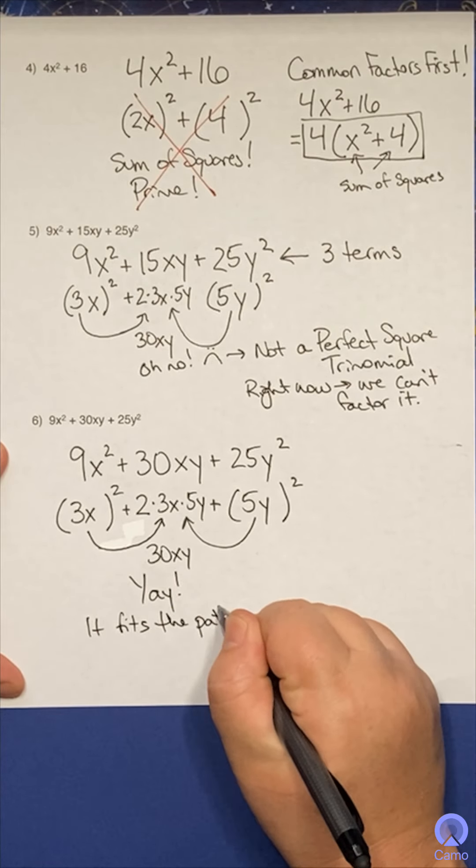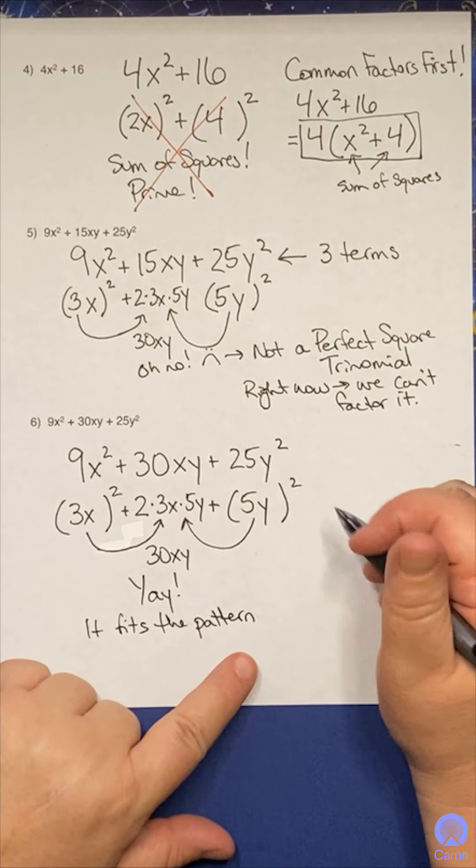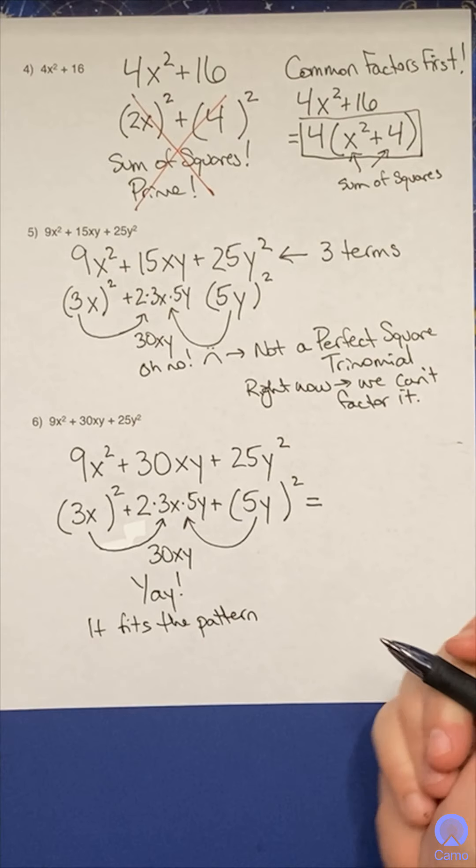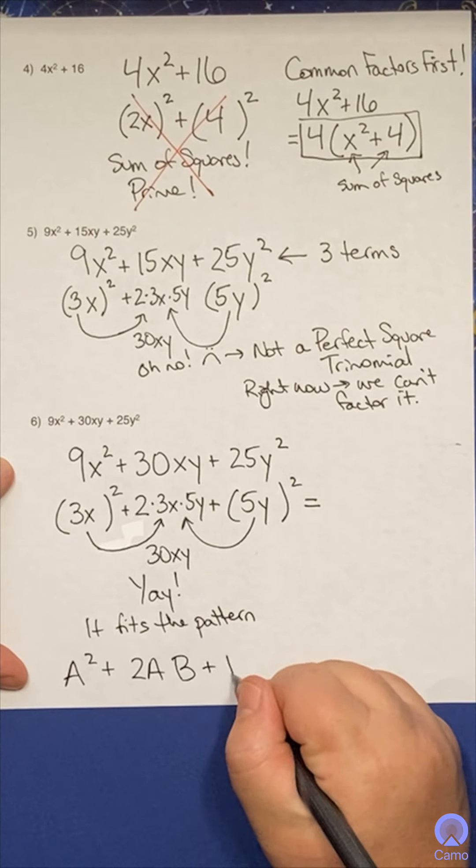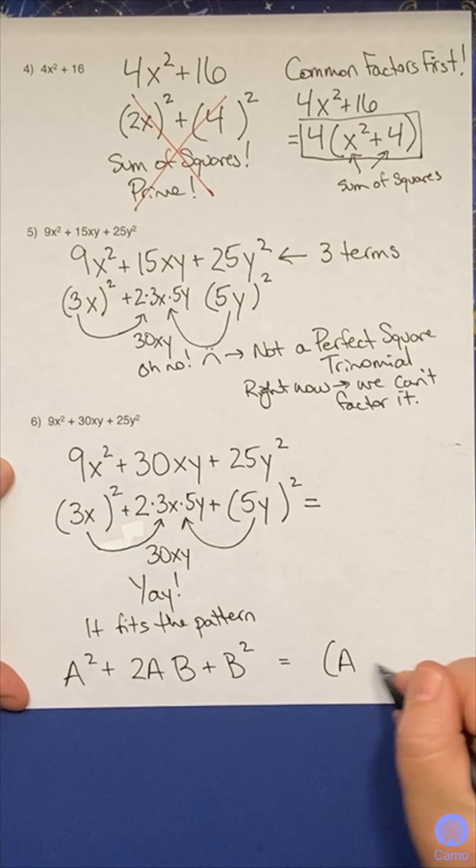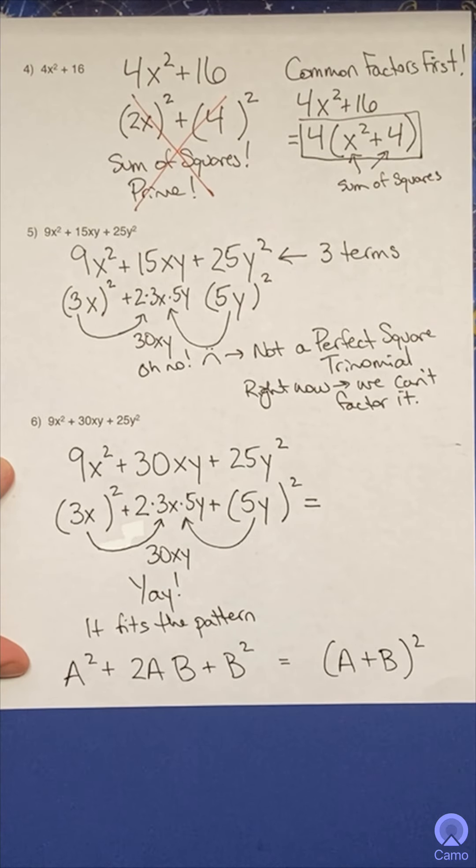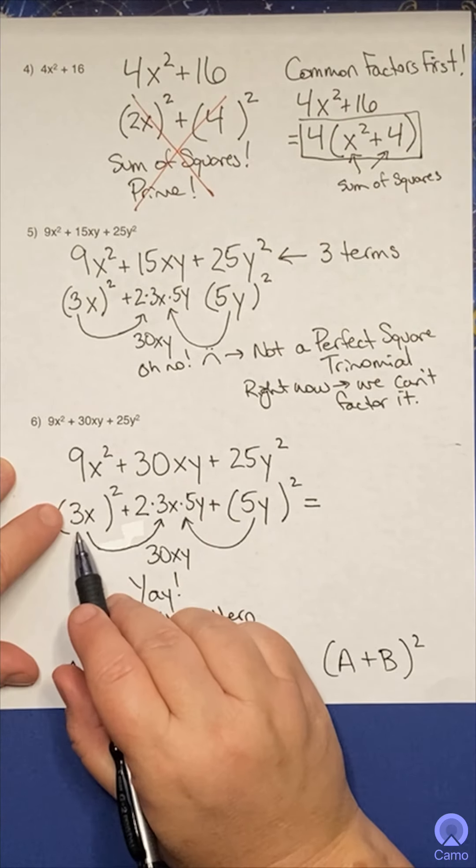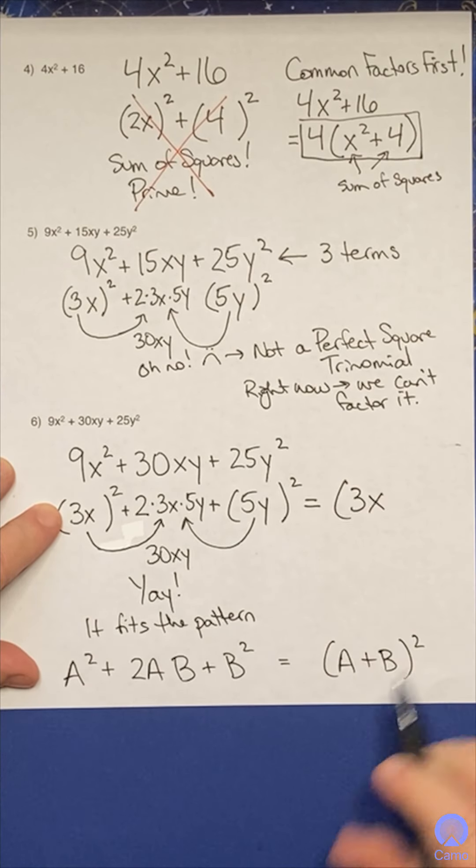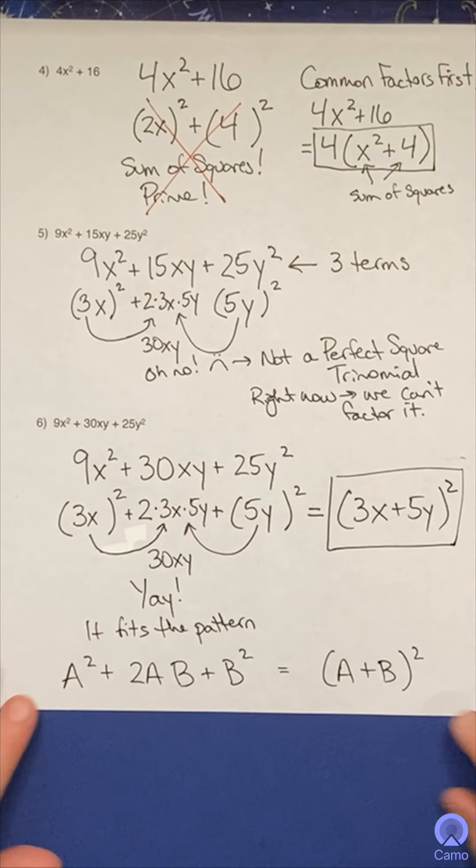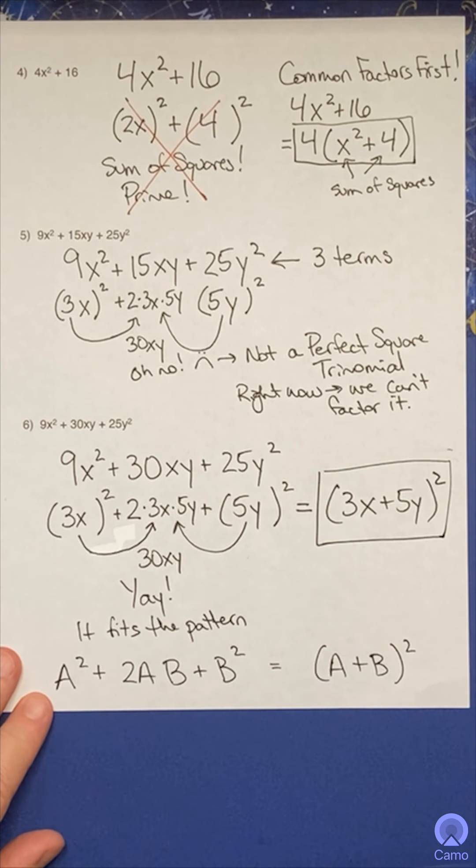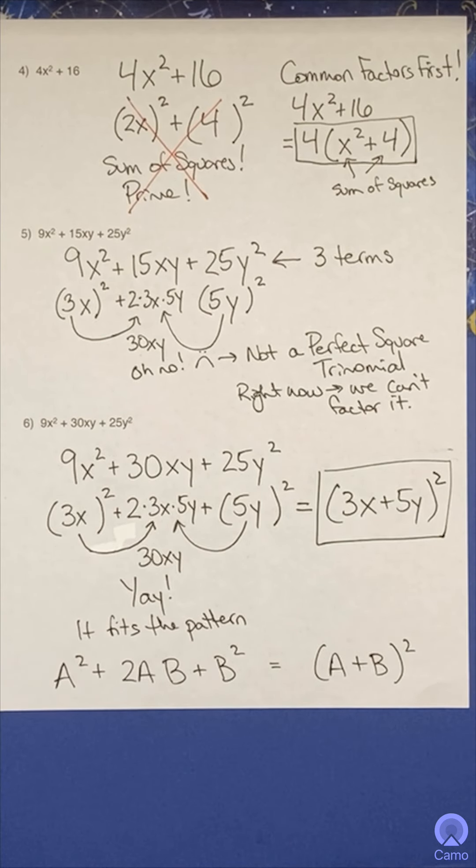And if it fits the pattern, then you can use the formula. And the formula then says, if it fits the formula, a squared plus two a B plus B squared, then you get a plus B, the quantity squared. Now what's A? A is whatever insides here. So that's three X plus B. B is right there. Plus five Y. Don't forget the squared. And there you go. And again, if you're not sure, foil this out, multiply it out, make sure you confirm that that is correct. And that's it. You guys are well on your way.